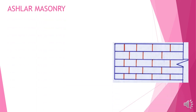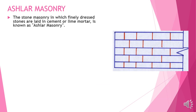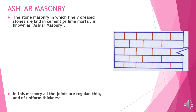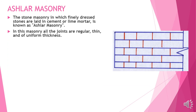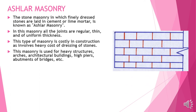Types of Aslar masonry. Aslar masonry: the stone masonry in which finely dressed stones are laid in cement or lime mortar is known as Aslar masonry. In this masonry all joints are regular, thin, and of uniform thickness. This masonry is costly as it involves high cost of dressing the stones. It is used for heavy structures, arches, architectural buildings, high piers, abutments, and bridges.